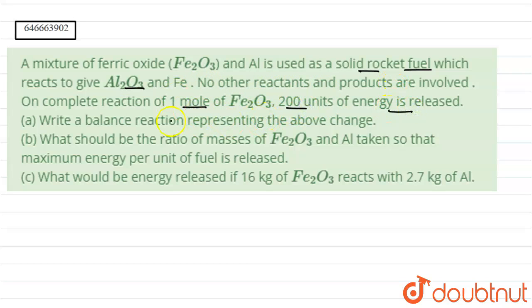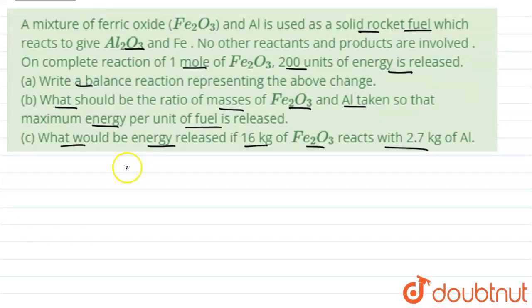We have to write the balanced chemical equation. What should be the ratio of masses of Fe2O3 and Al taken so that maximum energy per unit of fuel is released? And third, we have to answer what would be the energy released if 16 kg of Fe2O3 reacts with 2.7 kg of aluminum?